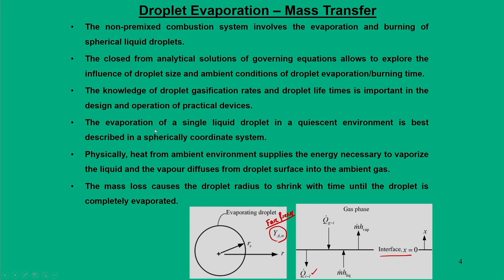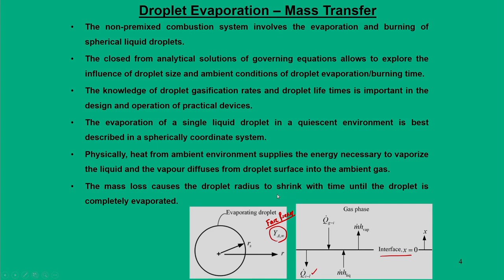We look at the evaporation of a single liquid droplet in a quiescent environment, and the best way to represent it is using spherical coordinate systems. Physically, heat from the ambient environment supplies energy necessary to vaporize the liquid, and the vapor diffuses from the droplet surface to the ambient gas. The mass loss causes the droplet radius to shrink until the droplet is completely evaporated.